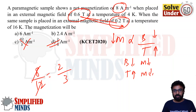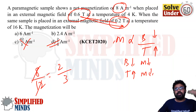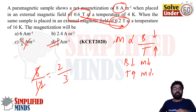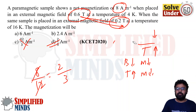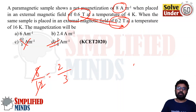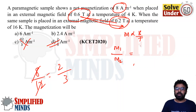Let me show the formula approach as well. Since M is proportional to B divided by T, we can write M1 by M2 equals (B1/T1) divided by (B2/T2). That is a very simple ratio. Just put all the values in: M1 is 8, B1 is 0.6, T1 is 4, B2 is 0.2, T2 is 16.